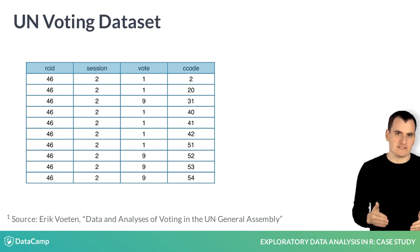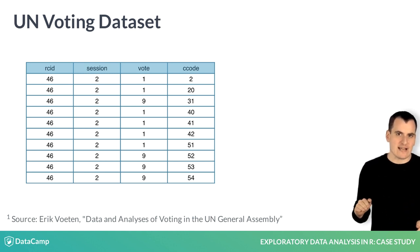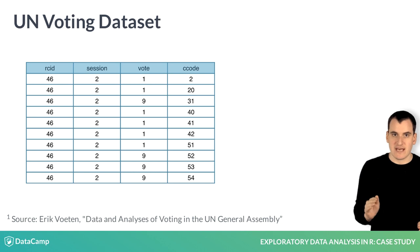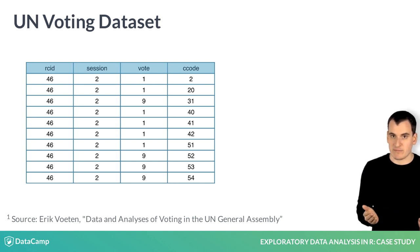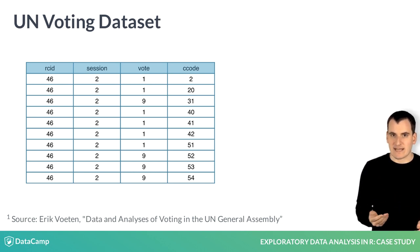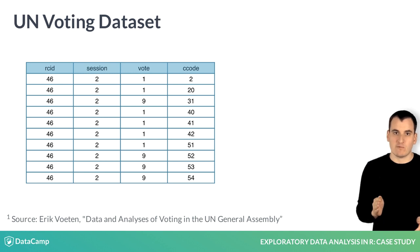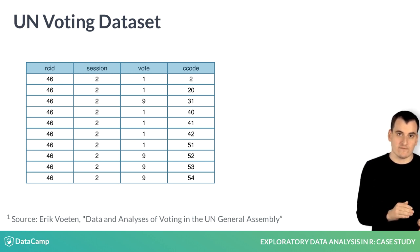In our data analysis vocabulary, rows of a data set are called observations, and columns are called variables. In this data set, each observation represents one combination of a roll call vote and a country.